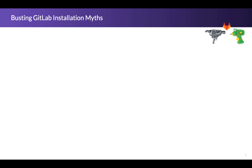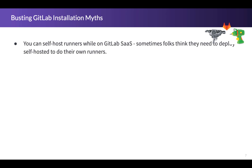I want to bust a few GitLab installation myths. As I interact with customers, people come in with certain impressions that may not reflect the flexibility available in the platform. One myth is that when you use GitLab SaaS, you can only use runners that are also SaaS or hosted by GitLab. In fact, you can deploy your own runners on-premise in your own data centers or anywhere you want while still using GitLab SaaS. So don't think you have to move to self-hosted GitLab in order to take advantage of self-hosted runners.